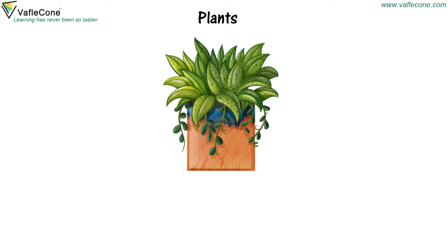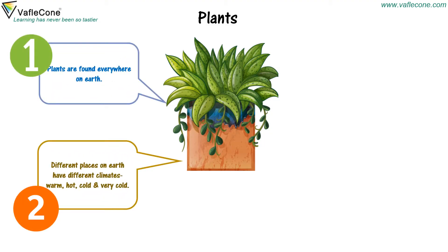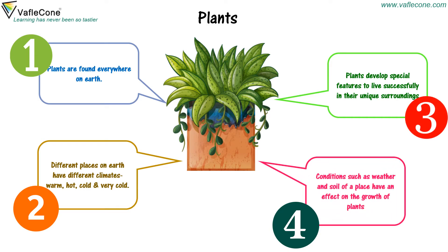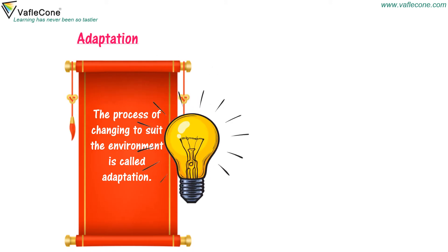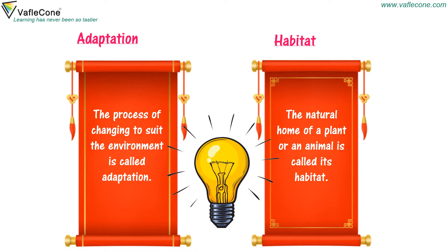Plants are found everywhere on Earth. Different places on Earth have different climates — warm, hot, cold and very cold. Plants develop special features to live successfully in their unique surroundings. Conditions such as weather and soil of a place have an effect on the growth of plants. The process of changing to suit the environment is called adaptation. The natural home of a plant or an animal is called habitat.